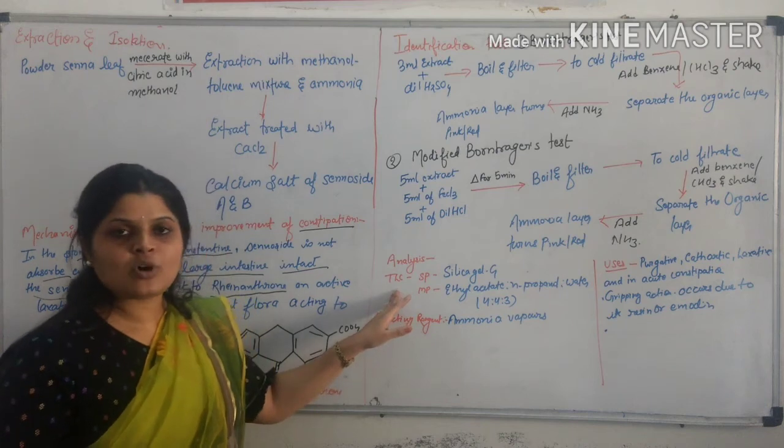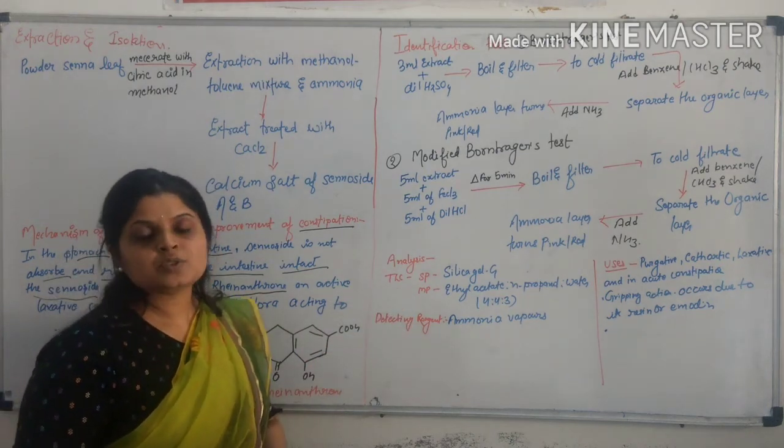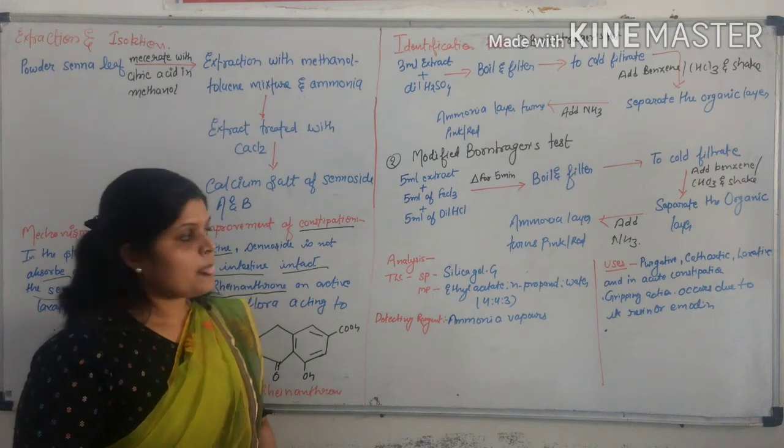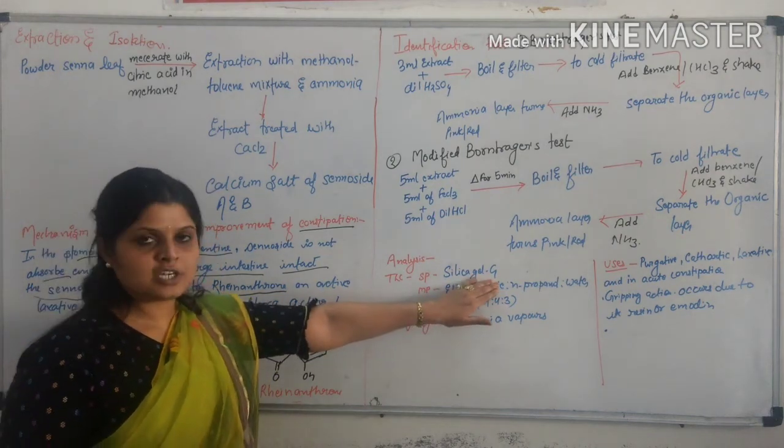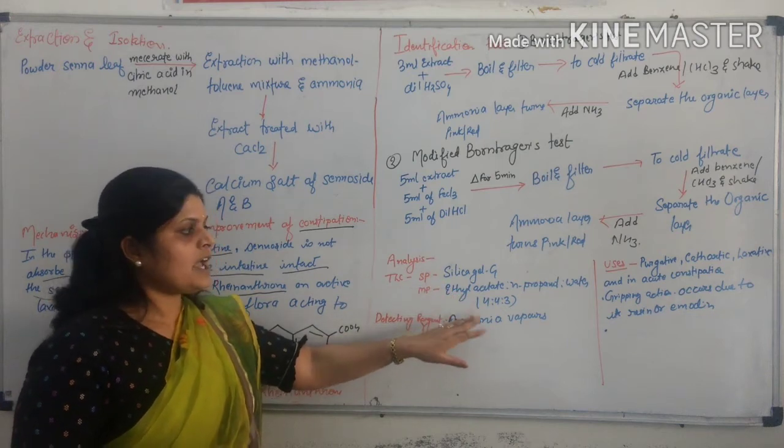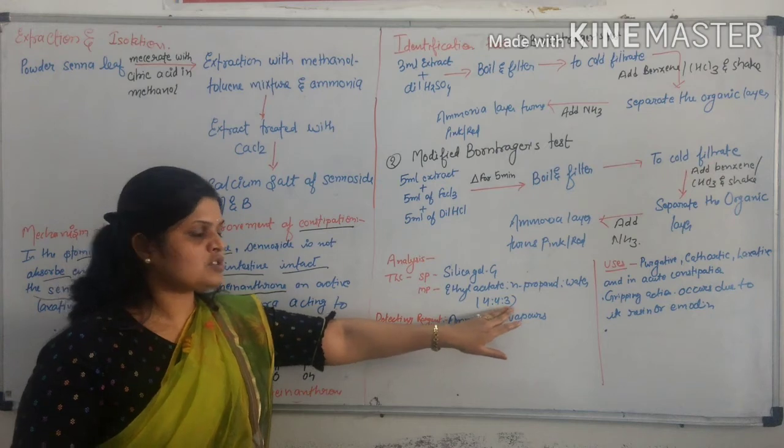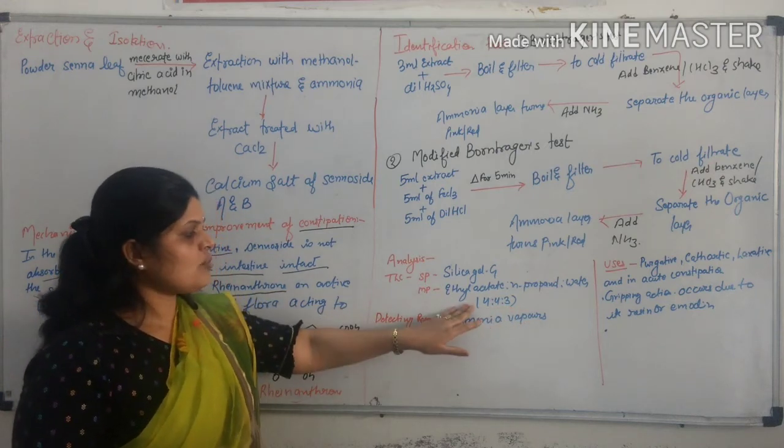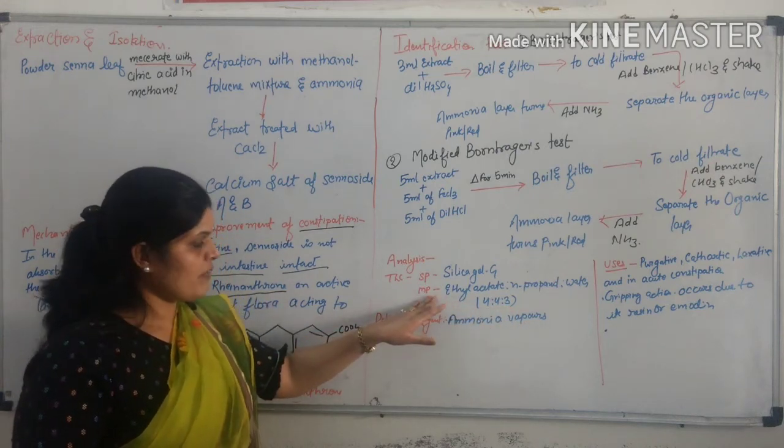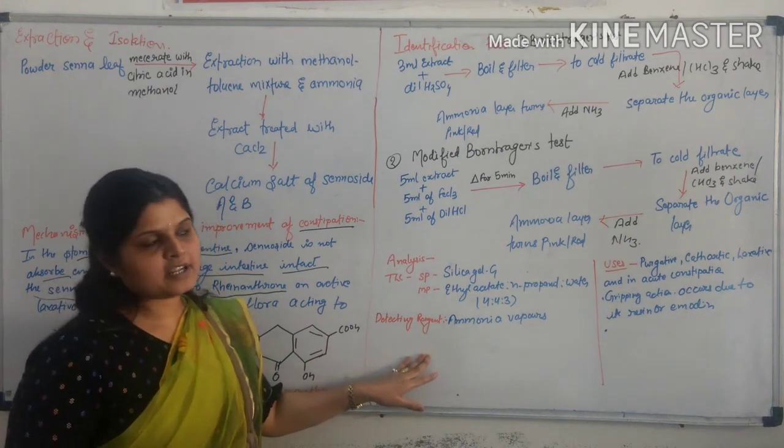Analysis of sennosides: Sennosides analyzed by thin layer chromatography, in which silica gel G is used as a stationary phase. Ethyl acetate, anthrone and water in combination 4:4:3, this combination used as a mobile phase. And ammonia vapors are used as a detection agent.